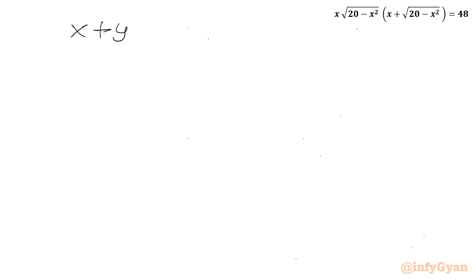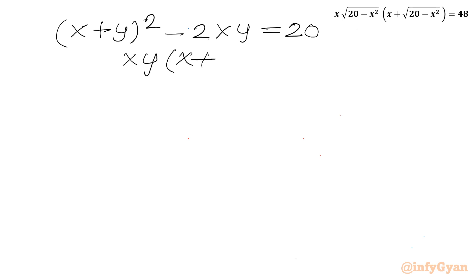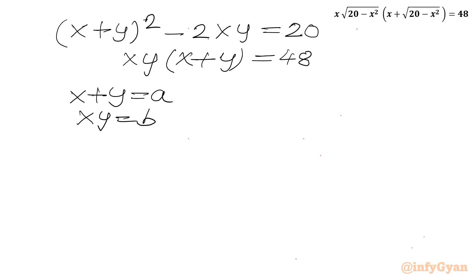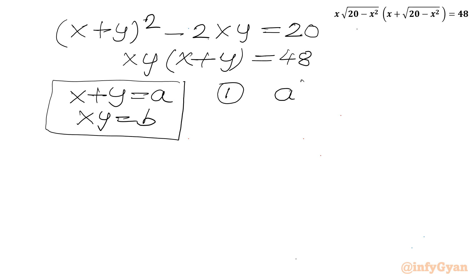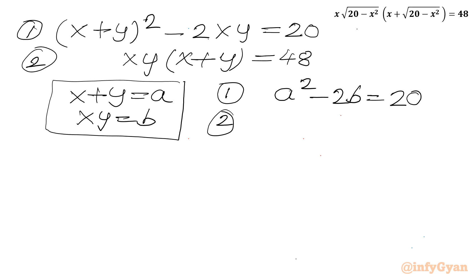So we will solve this system of equations for the real values of x. We have: (x plus y) whole squared minus 2xy equal to 20, and xy times (x plus y) equal to 48. Now I will consider x plus y equal to a and xy equal to b. Our first equation becomes a squared minus 2b equal to 20, and the second equation becomes a times b equal to 48.